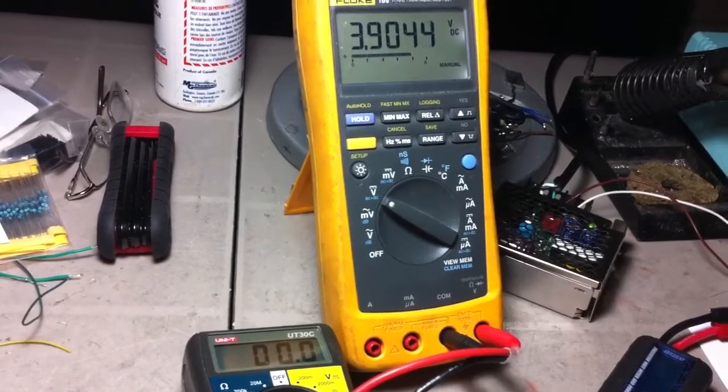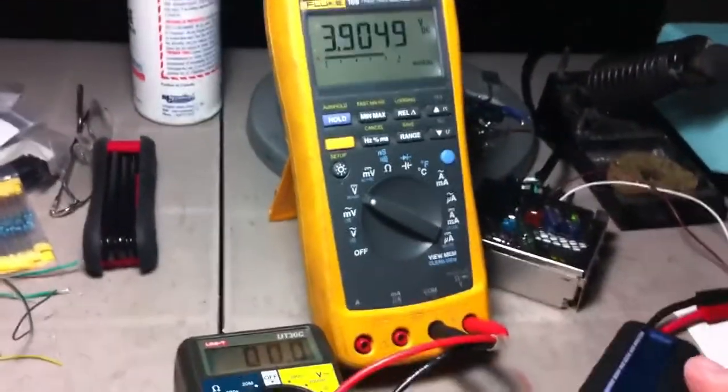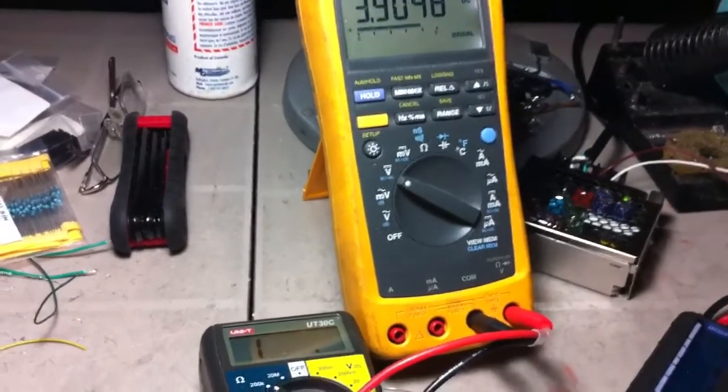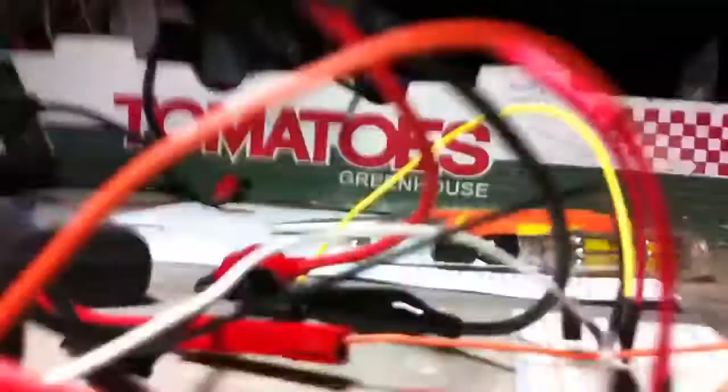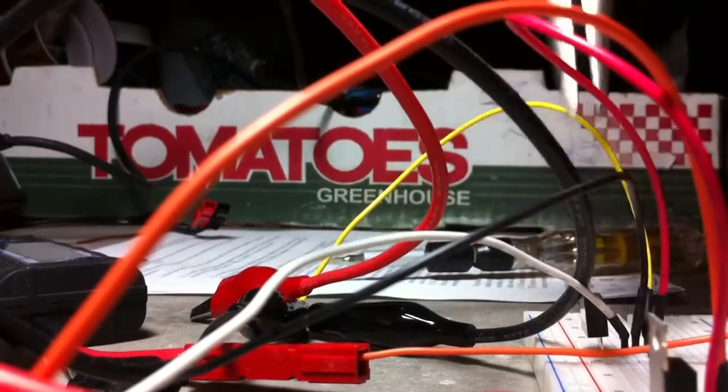Oh, finally tripped over. So 3.9. So that's like a tenth of a volt difference - over a tenth of a volt difference between two different MOSFETs.